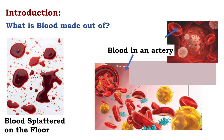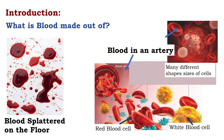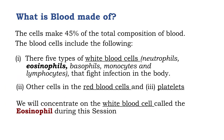Now on the right, we look at blood in the artery, and we can see it's made out of many different shapes and sizes of cells. Some are red blood cells and others are white blood cells. So we're going to ask the question once again: what is blood made out of?